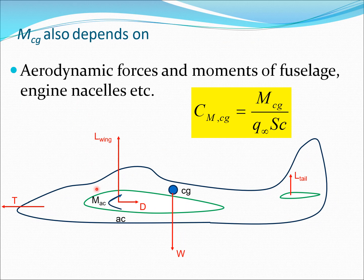Besides the wing and the horizontal tail, the CMCG also depends on the aerodynamic forces and moment which act on the fuselage, the engine nacelles, and so on. We assume we are able to calculate this total MCG and then obtain the coefficient for the moment. CMCG is obtained by dividing MCG by Q∞ · S · c, where Q∞ is the dynamic pressure (½ρV²), S is the area of the wing, and c is the chord of the wing.